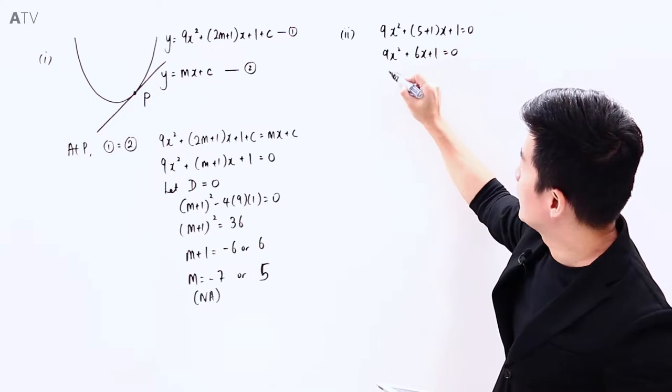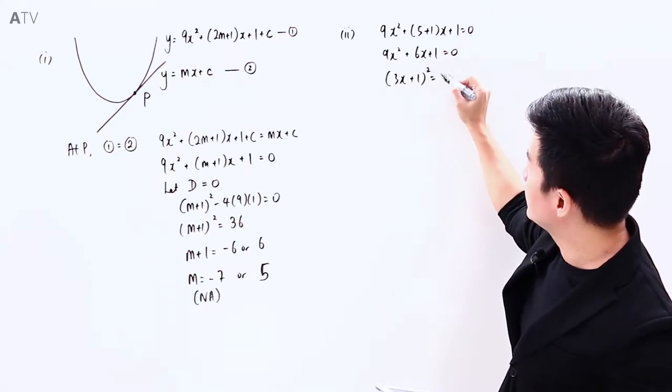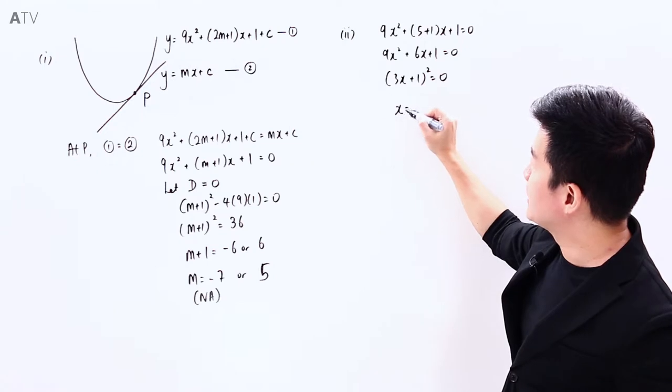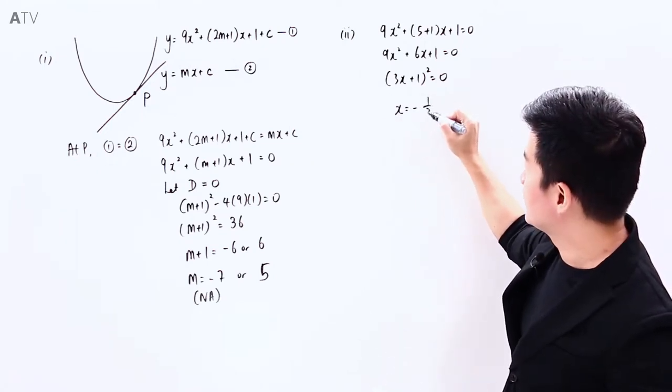Factorizing this, we will have (3x plus 1)² equals 0, which means that x is equal to minus 1 over 3.